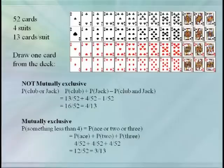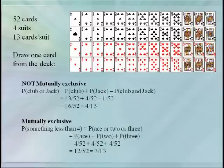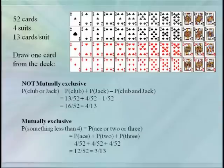Another example with cards: if we're drawing a single card from a standard deck of 52, the probability of a club or a Jack is not mutually exclusive, since it's possible to have a club and a Jack. Hence we use the general addition formula: the probability of a club plus the probability of a Jack minus the probability of a club and a Jack, which works out to 13 over 52 plus 4 over 52 minus 1 over 52, and eventually 4 thirteenths. Suppose instead we consider drawing something less than 4 — that is, an ace or a 2 or a 3. These are mutually exclusive events, so the probability is just the sum: 12 over 52, or 3 thirteenths.